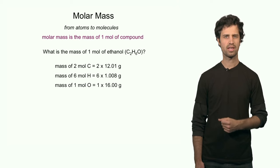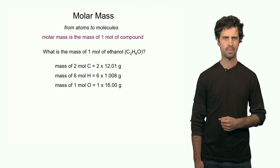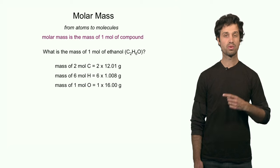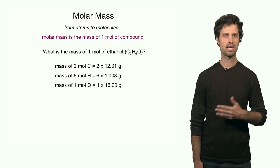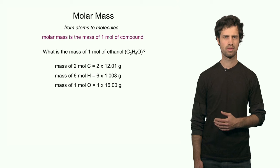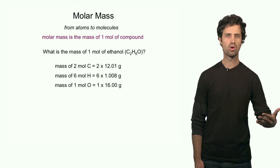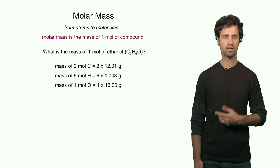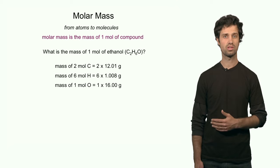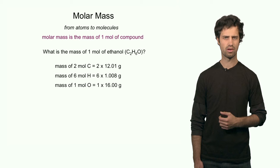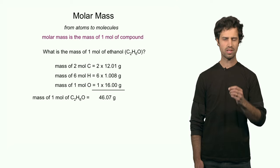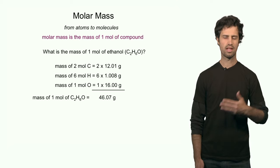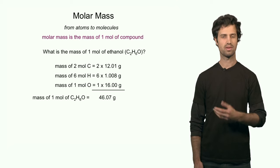The molar mass of carbon is 12.01 grams. Six moles of hydrogen per one mole of ethanol, so six times the molar mass of hydrogen — six times 1.008 — is the contribution of hydrogen to the total. One mole of oxygen per one mole of ethanol; the molar mass of oxygen is 16 grams, so 1 times 16 is its contribution. Adding up all these contributions, we find a total of 46.07 grams. That means the molar mass of ethanol is 46.07 grams.